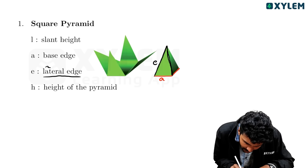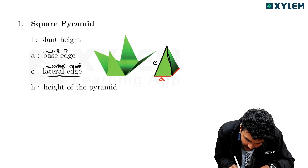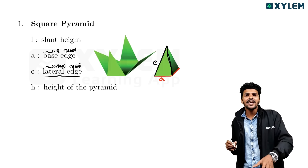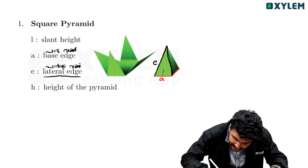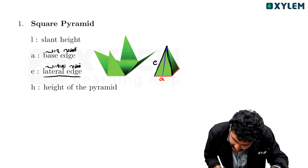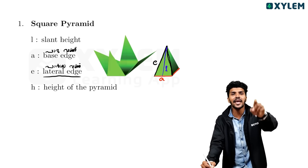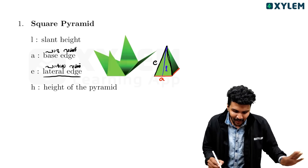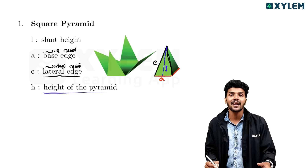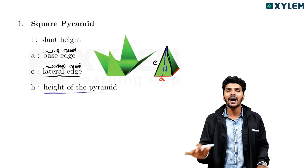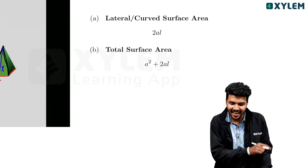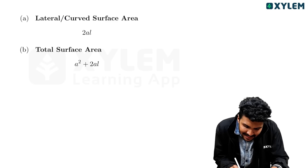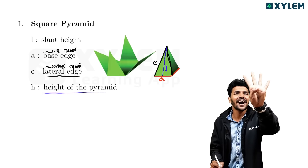The lateral edge - these parts are all the same, equal sides forming a triangle. The height is L - the slant height. The exact height of the pyramid is H. The symbol for height is H. This is the lateral surface area and the total surface area.